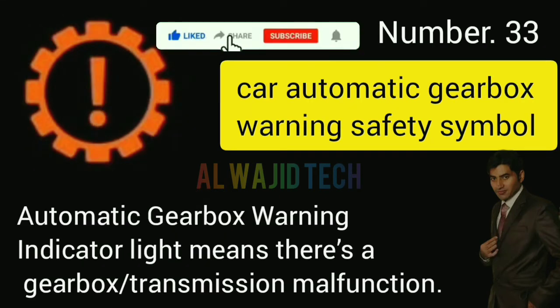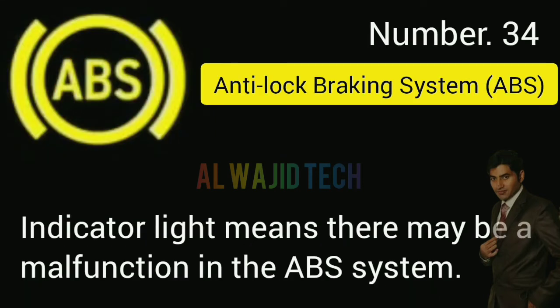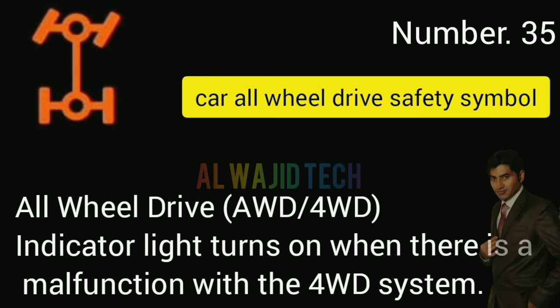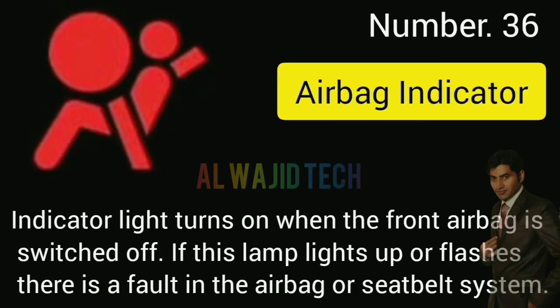Number thirty-two: Car brake light warning. The brake light warning indicator means an exterior brake light bulb is defective — check the operation of all exterior brake light bulbs. Number thirty-three: Automatic gearbox warning. This indicates a gearbox transmission malfunction. Number thirty-four: Anti-lock braking system indicator means there may be a malfunction in the ABS system. Number thirty-five: All-wheel drive indicator turns on when there is a malfunction with the four-wheel drive system.